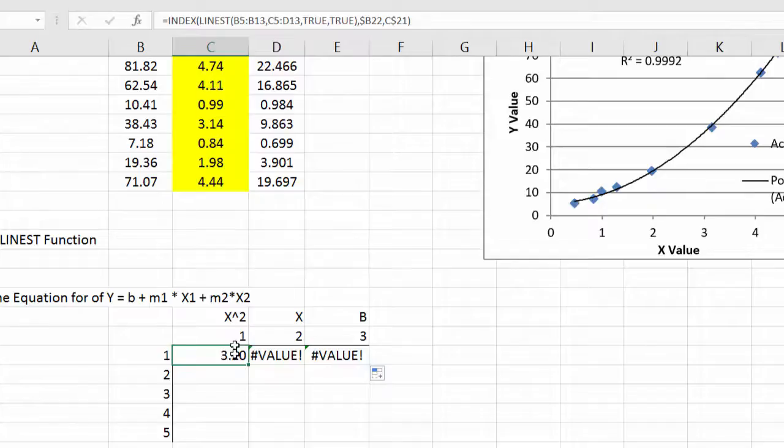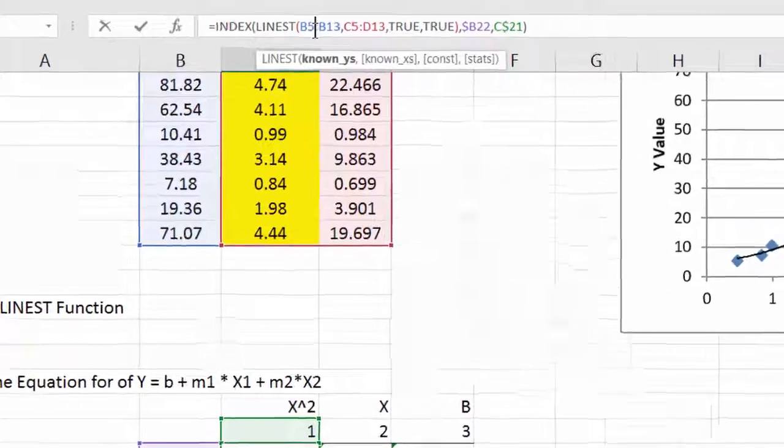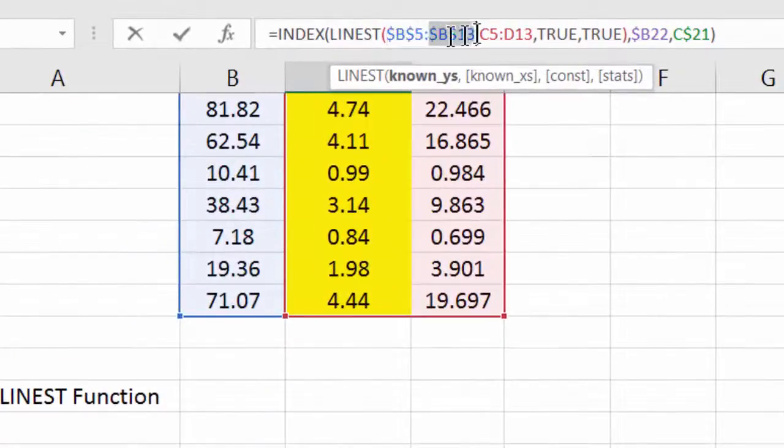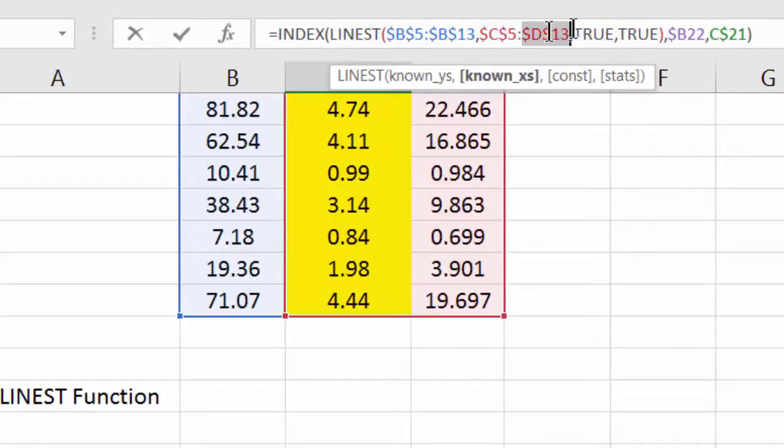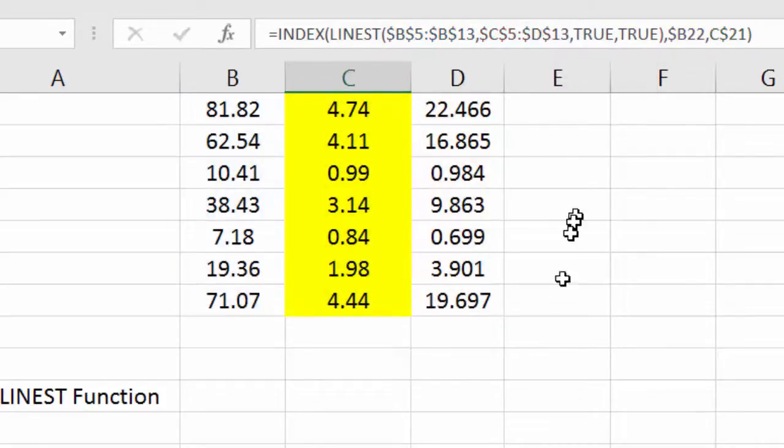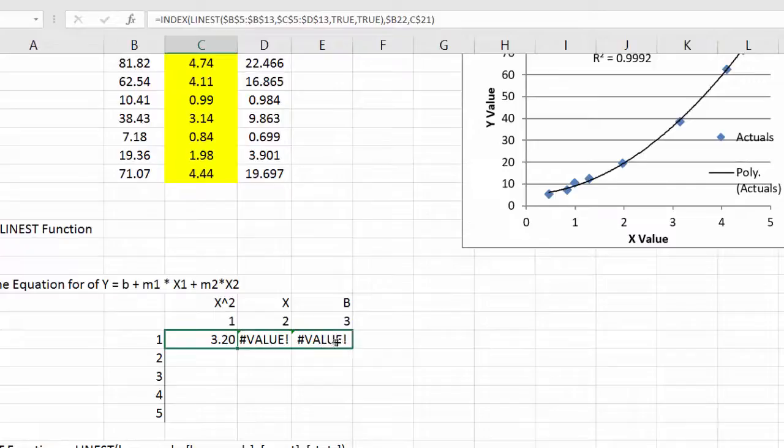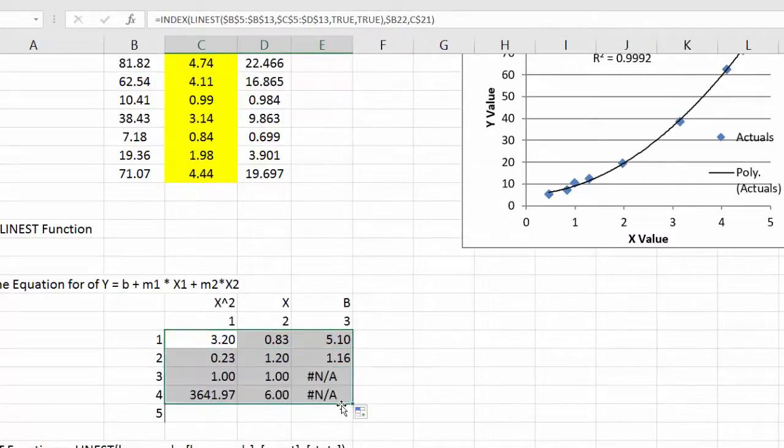down or across. But I didn't do that. I need to set this to F4, F4, F4, F4, and F4. Okay. So then when I copy this across and down I get the answers that I'm expecting.